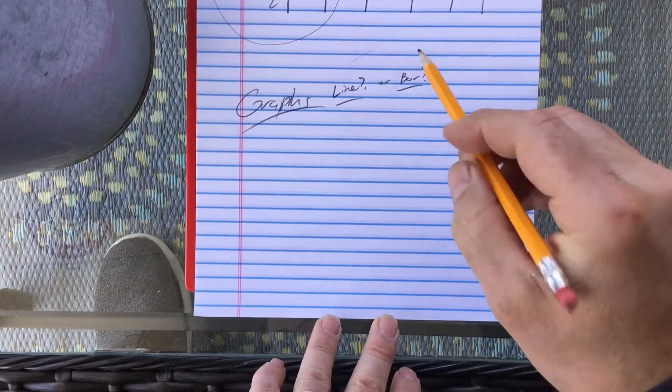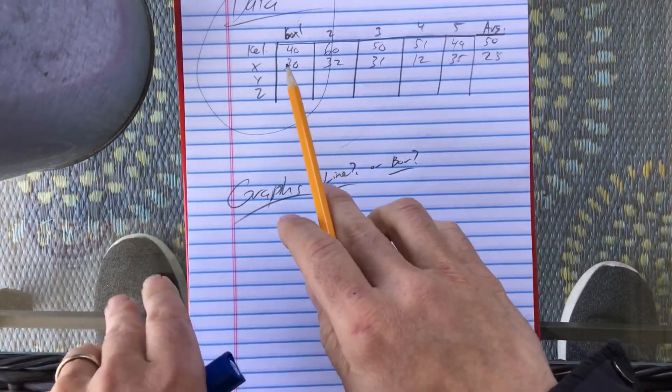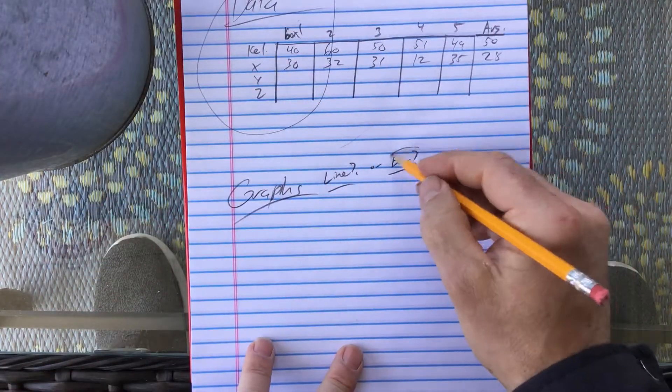Okay. With this one, since it's amounts, we're just comparing amounts, that would be a bar graph.